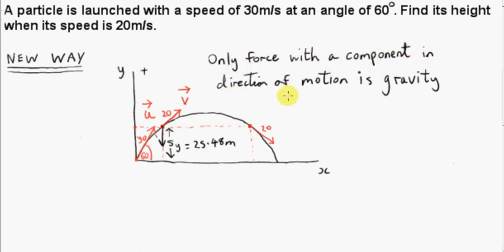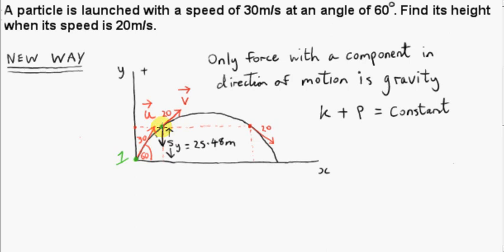More generally, this condition is important because we'll see situations where gravity is not the only force acting. Conservation of energy says the kinetic energy plus the potential energy at any point in the particle's trajectory is constant or conserved. We consider two positions: just after the particle is launched, and when the particle's speed is 20. It's important to say 'just after launch' because the launching mechanism exerts a force on the particle, but as soon as it leaves, only gravity acts.